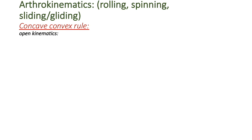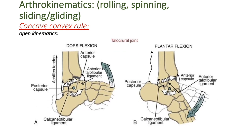During open kinematic chain movement at the talocrural joint, the talus moves on the tibia. During dorsiflexion, the talus rolls superiorly and its surface slides inferiorly, because the surface of the talus is convex and therefore slides opposite to the direction of movement. During plantar flexion, the talus rolls inferiorly and its surface on the tibia slides superiorly.